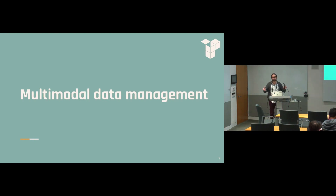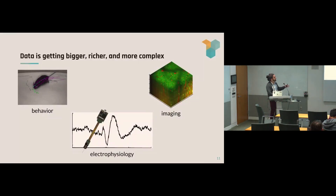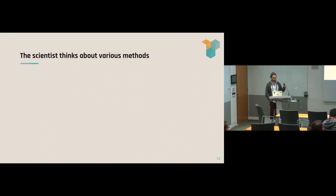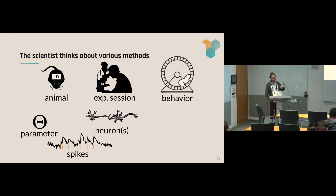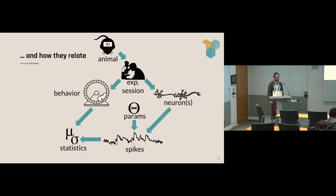Starting from first principles with DataJoint, the primary motivation comes from managing multimodal data. Any graduate student or postdoc today is dealing with a lot of data management: many animals, each with one or more sessions, each session giving you behavioral data and neural recordings, a set of parameters associated with pre-processing that gives you the spikes, and so on. There are so many different data files, and it's up to the scientist to put them in an organized pattern conceptually.